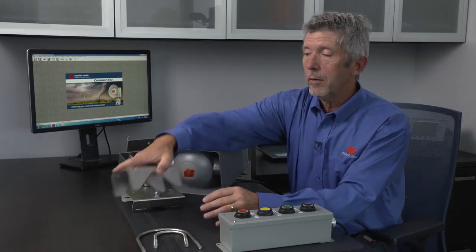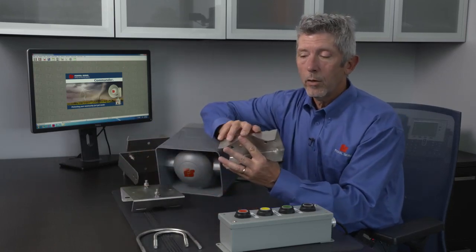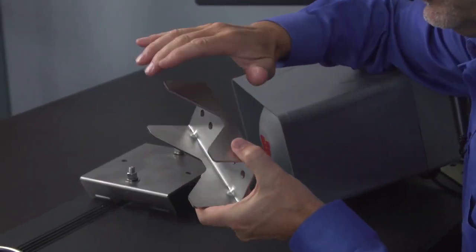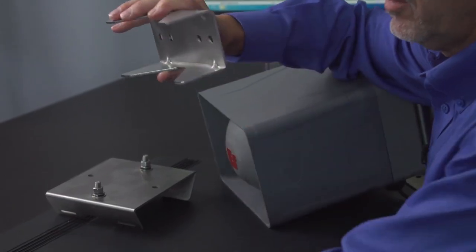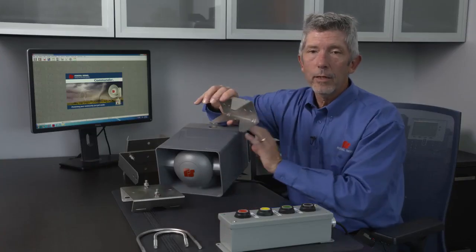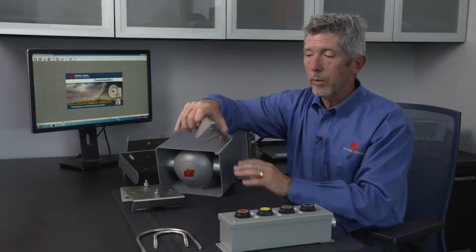We also have a small pole mount. This again comes with all the hardware required. It comes with two different size U bolts and also this stainless steel bracket. The U bolts then feed through this bracket to attach to the rear mount.